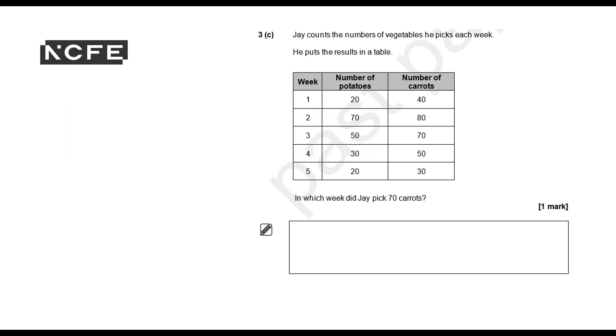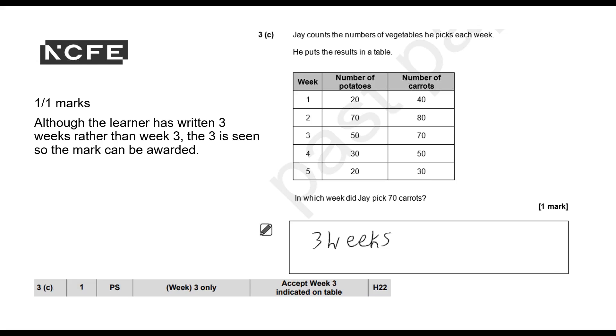3C: Jay counts the number of vegetables he picks each week. He puts the results in a table. In which week did Jay pick 70 carrots? And here's the learner's answer. You can decide how many marks you're going to award out of a possible one mark. And we're going to give them the one mark. Although the learner has written three weeks rather than week three, the three is seen, so the mark can be awarded.